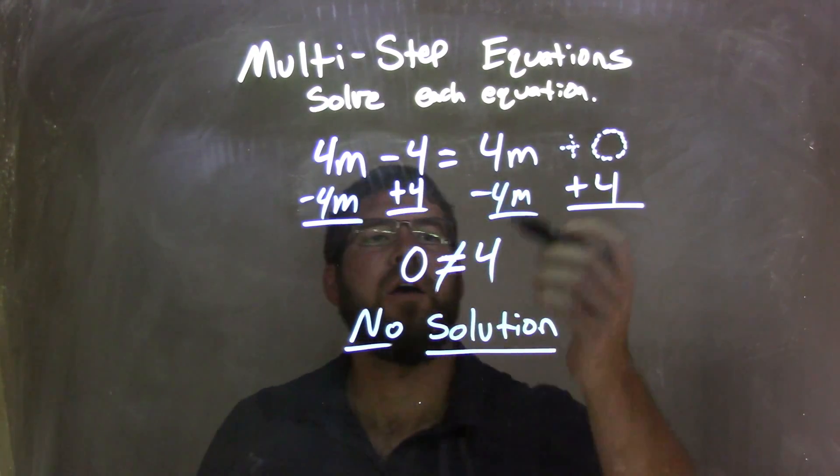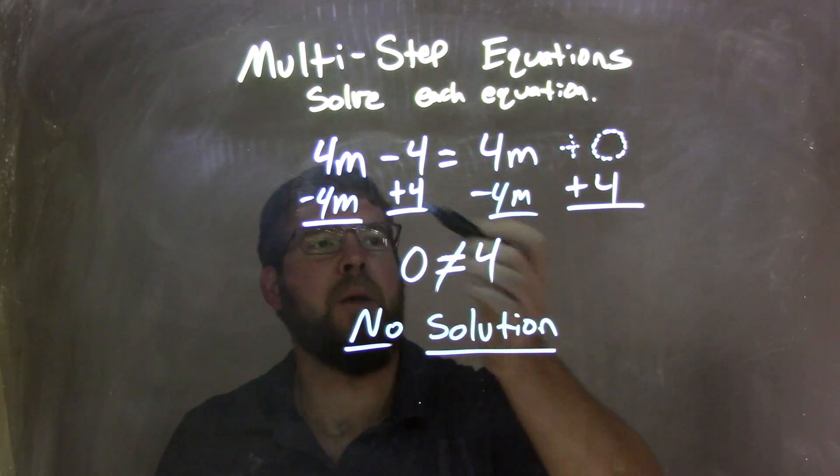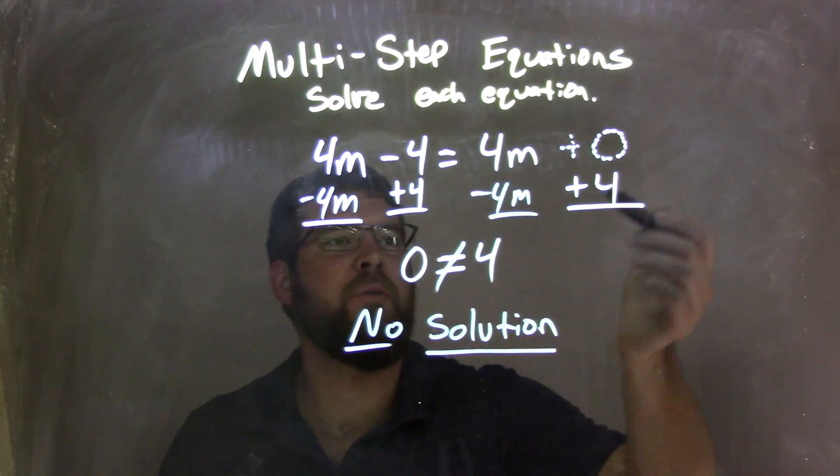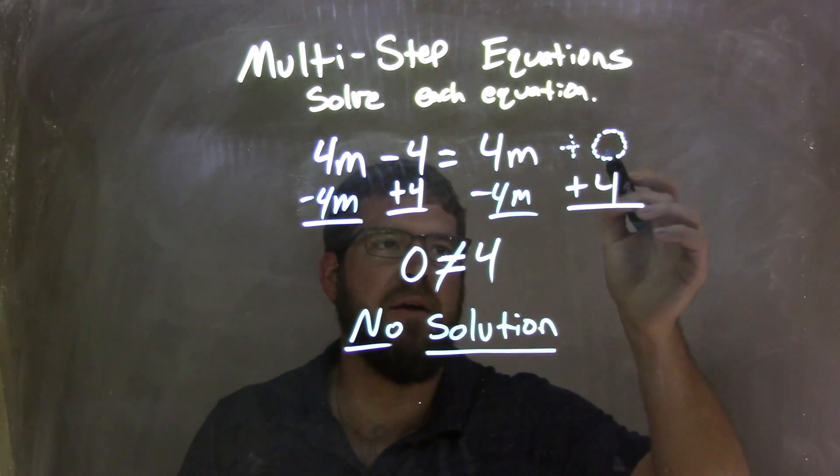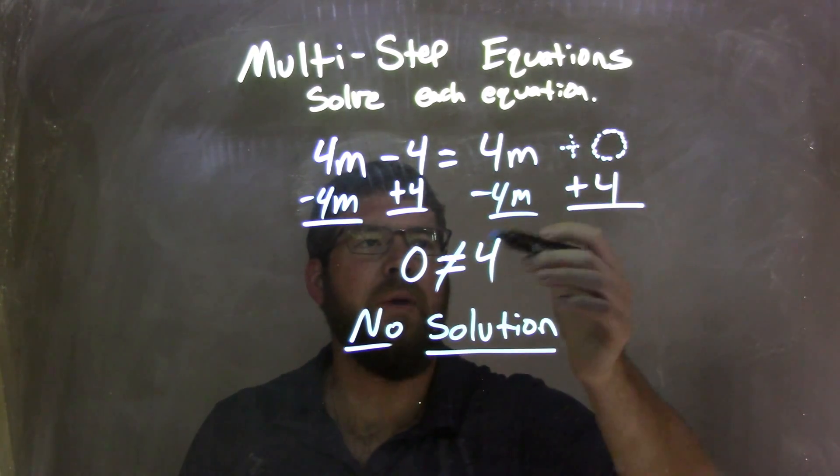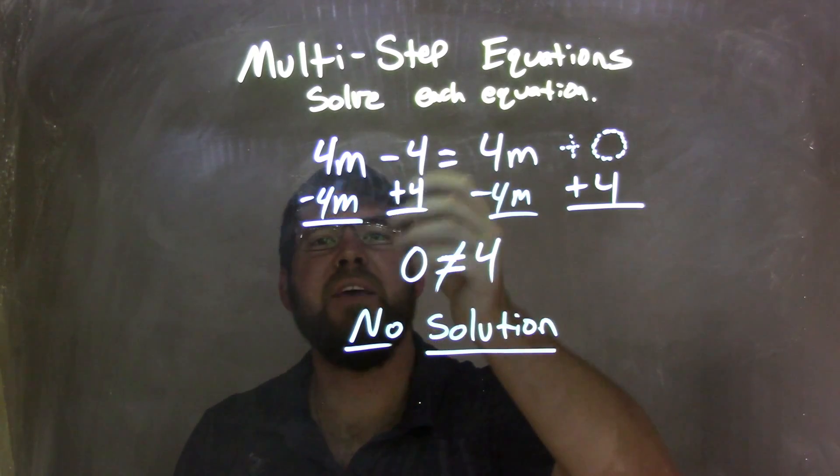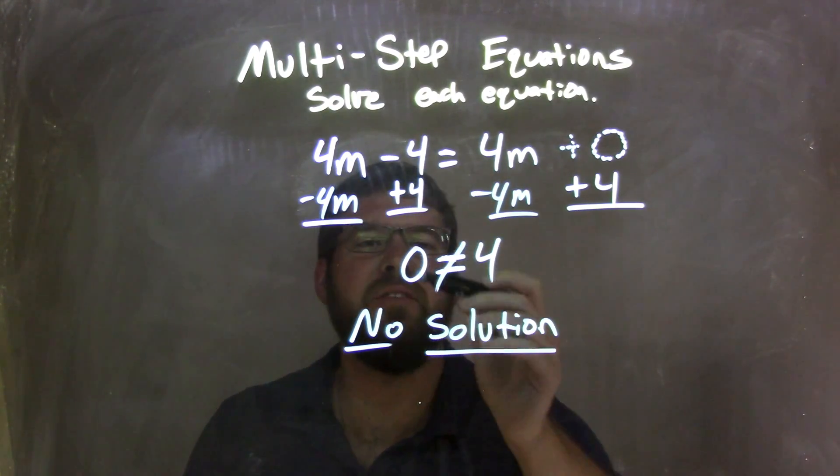So let's recap. We brought our m's over to the left and numbers to the right. Subtracting a 4m, cancel them out here, adding a 4. Remember, we add like an imaginary 0 that's up there. So by doing so, we have 0 plus 4, which is 4, and these all cancel, leaving it with just a 0.